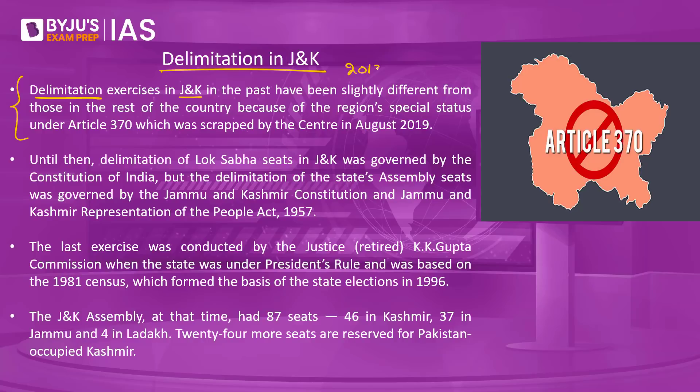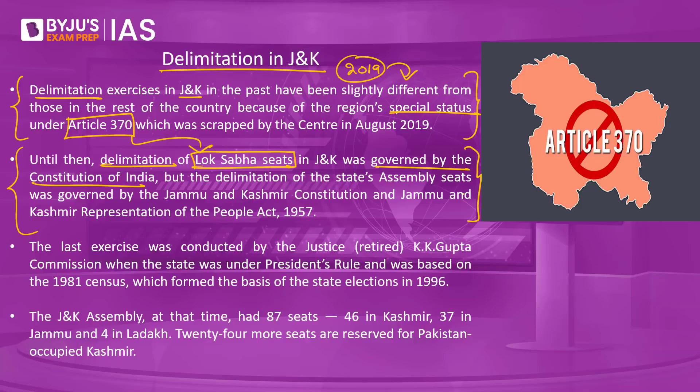Delimitation in J&K before 2019 was slightly different from the rest of India. Because J&K enjoyed a special status under Article 370, the delimitation of Lok Sabha seats was governed by the Constitution of India — so parliamentary constituency delimitation was similar to the rest of India. However, delimitation of state assembly constituencies was different, as it was governed by the J&K Constitution and J&K Representation of People Act.